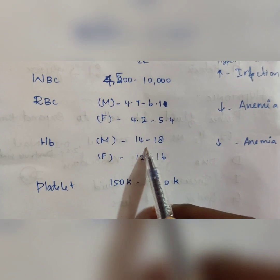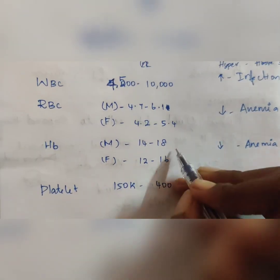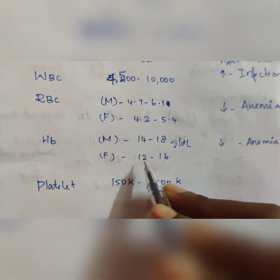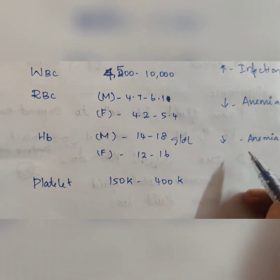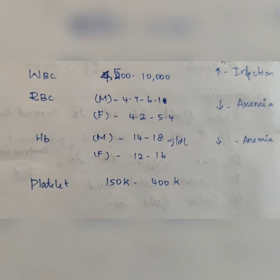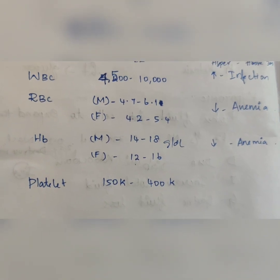Hemoglobin, male 14 to 18 grams per deciliter. For female, 12 to 16 grams per deciliter. In case there are changes, decreased HB level indicates anemia.